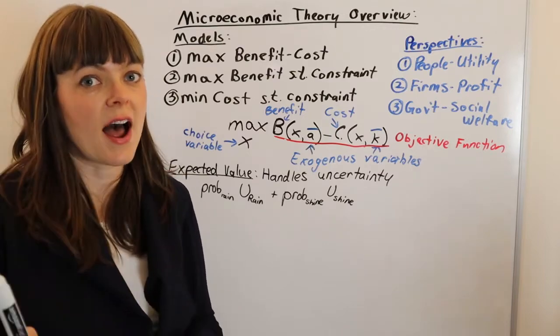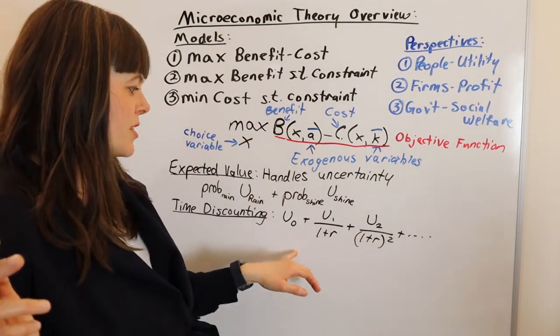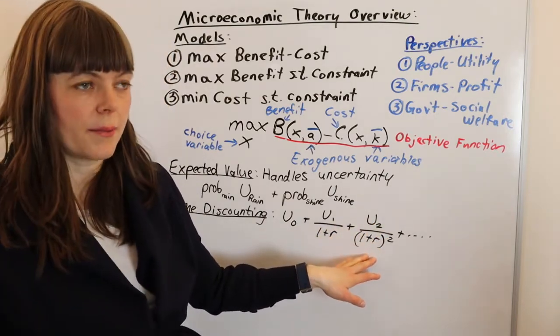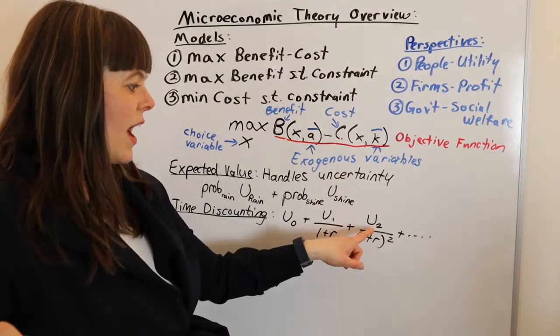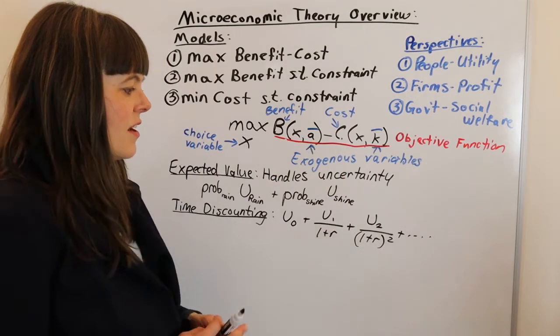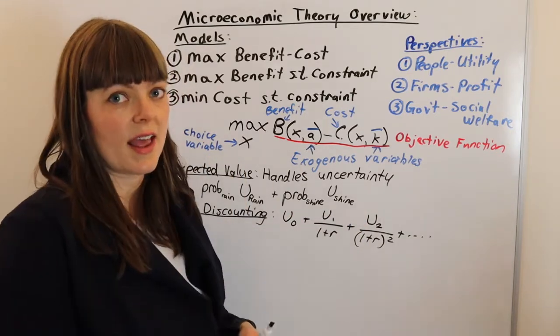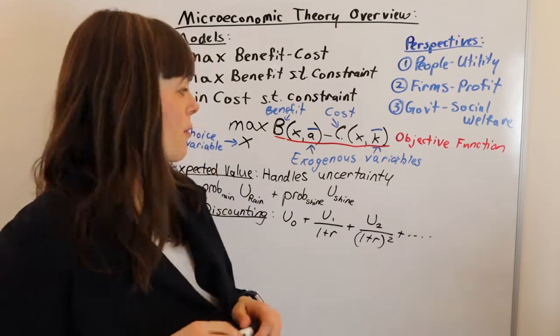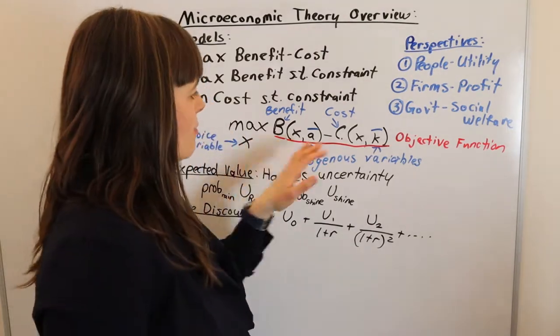The next thing we might need to figure out how to handle is time. I'm just giving an overview so I'm not going to go into detail about how this works, but we discount utilities that happen in the future because—well there's a lot of reasons we discount them in the future. The world could end between now and then. If we had money in the present we could reinvest it. There's lots of reasons behind this, but discounting the future so that something received in two years is actually worth less from today's perspective than something received today. That's one technique we have for handling differences across time, and we're going to need to use that whenever we have time entering in a meaningful way in our objective function.